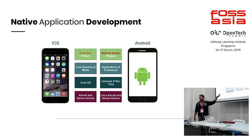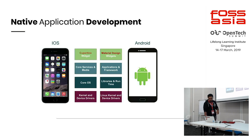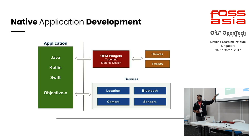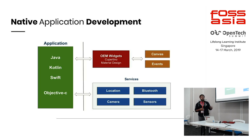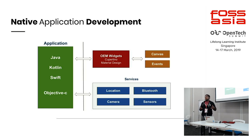This is a very high-level overview. If you're thinking about native application development — applications for a single platform — in this high-level architecture diagram, you have the application written in Java, Kotlin, or Swift. Earlier days we used Objective-C. On the other part, we have the OEM widget box where you render the UI. Your application code directly communicates with the OEM widgets to render the UI, and they have Canvas and Events at the same level. Whenever your application wants to use location services, Bluetooth, or any sensors, we call them through the services.